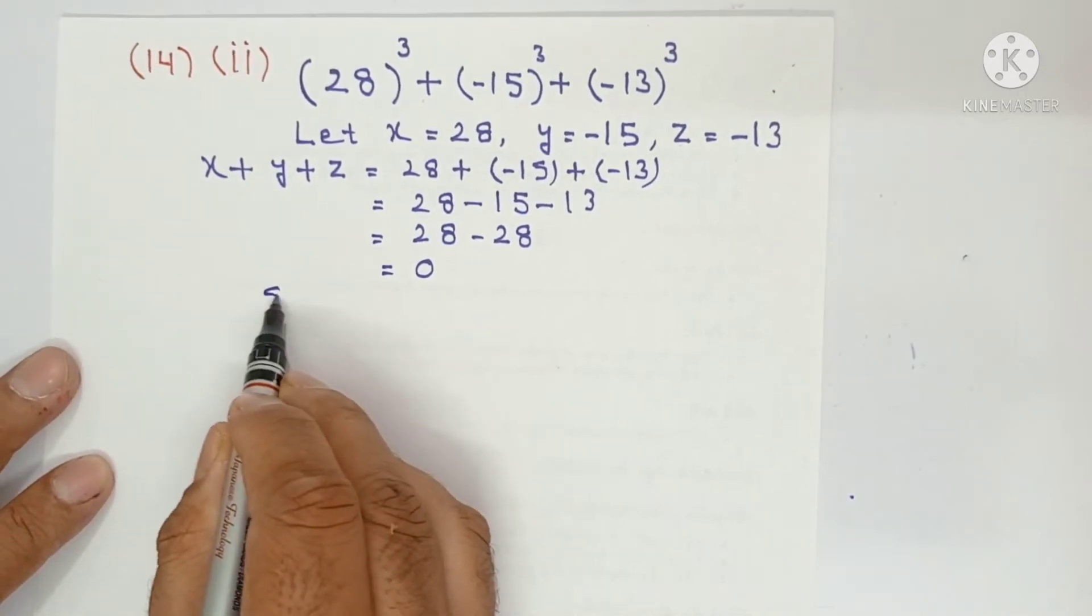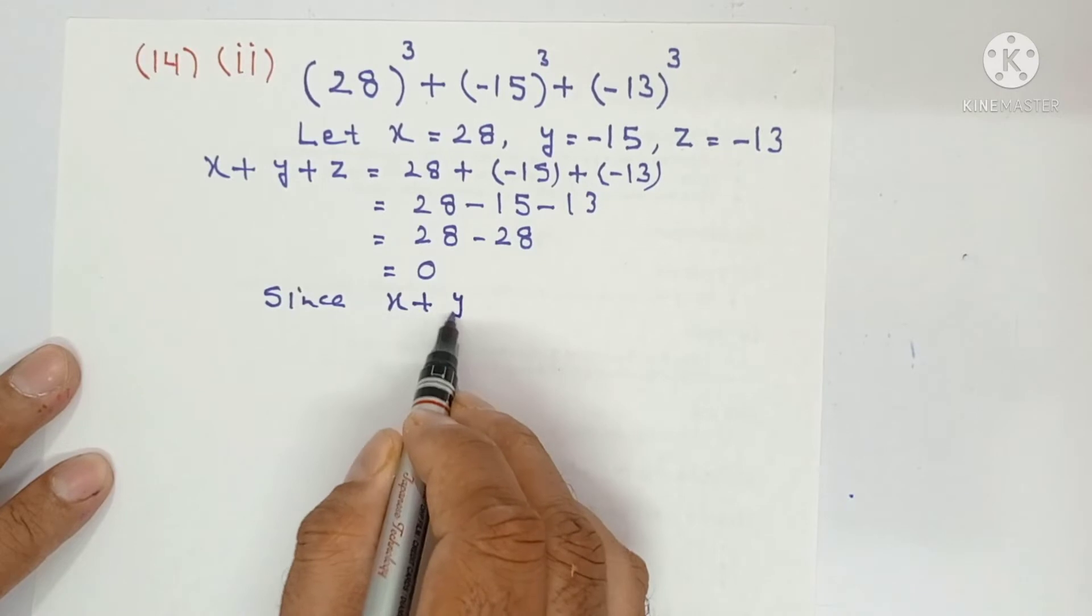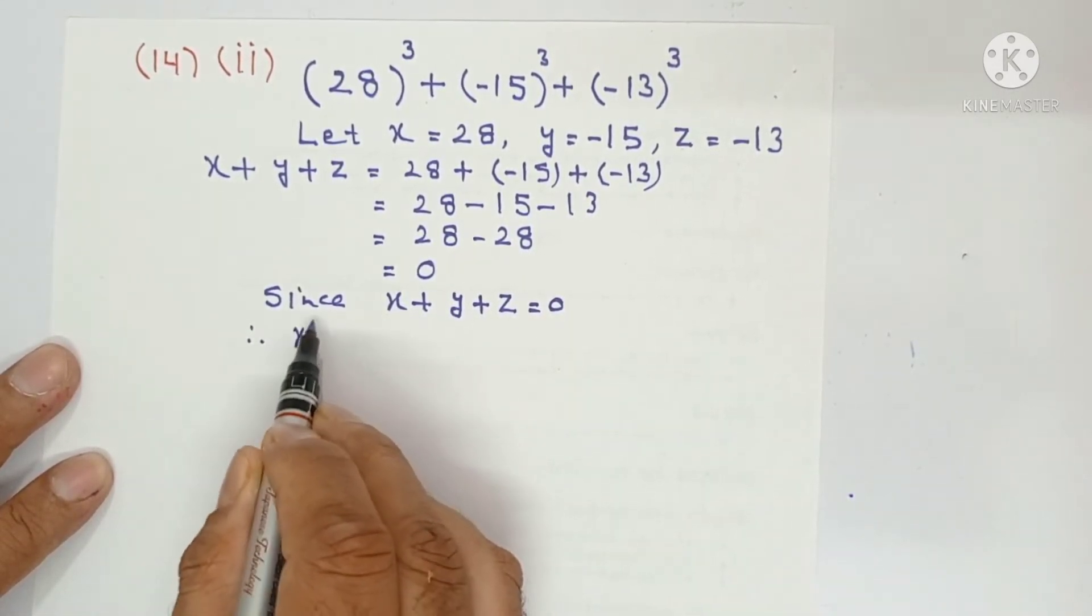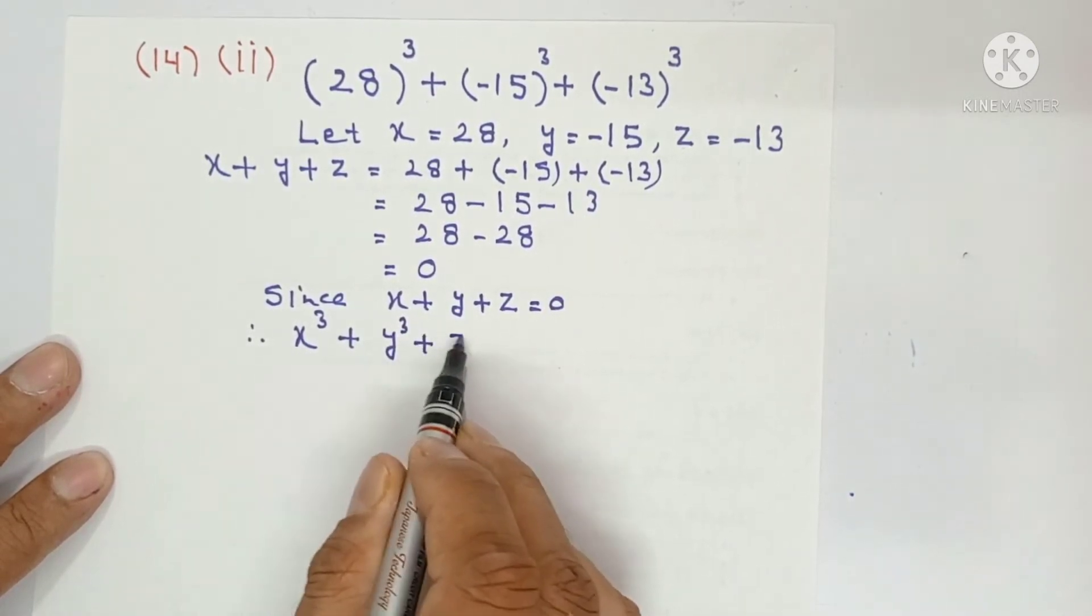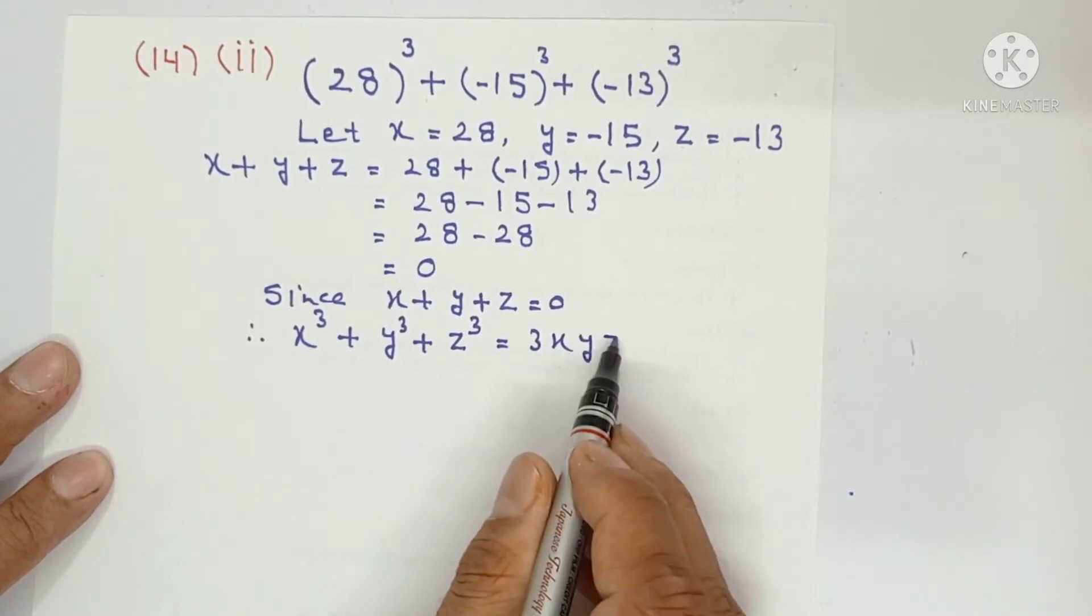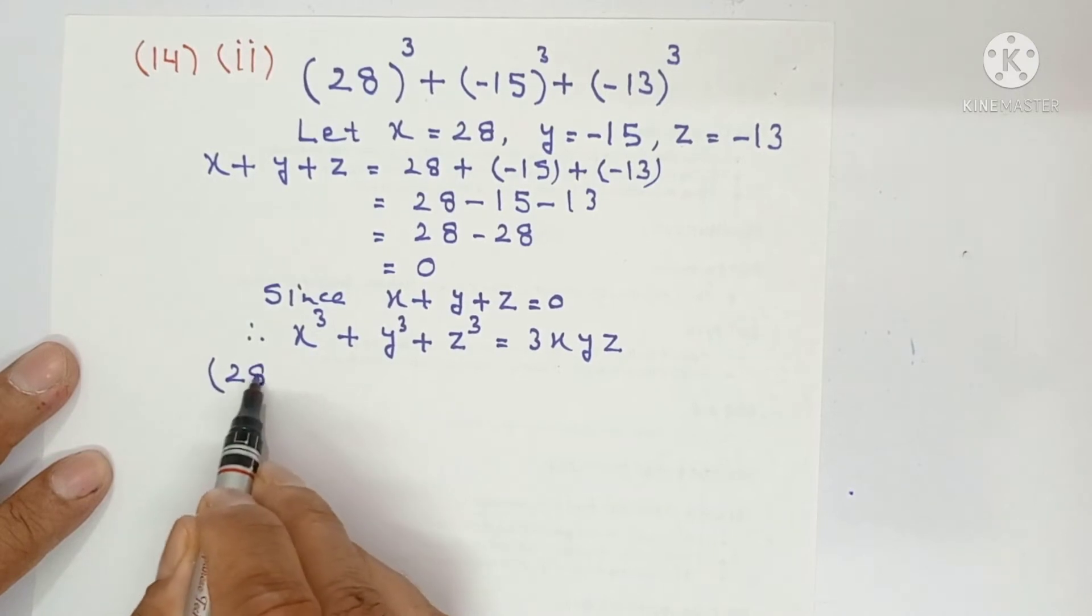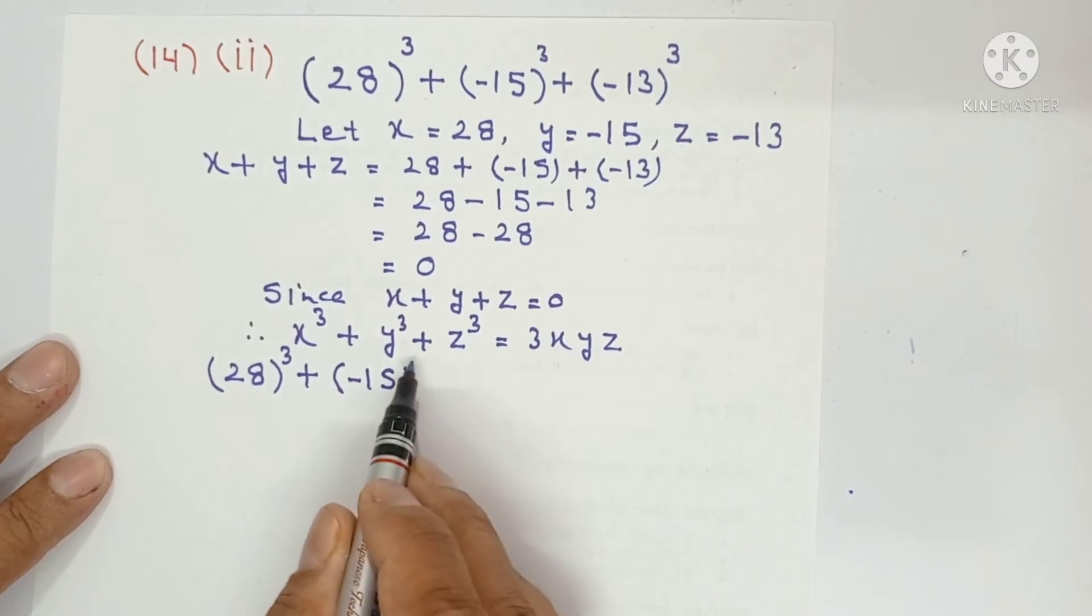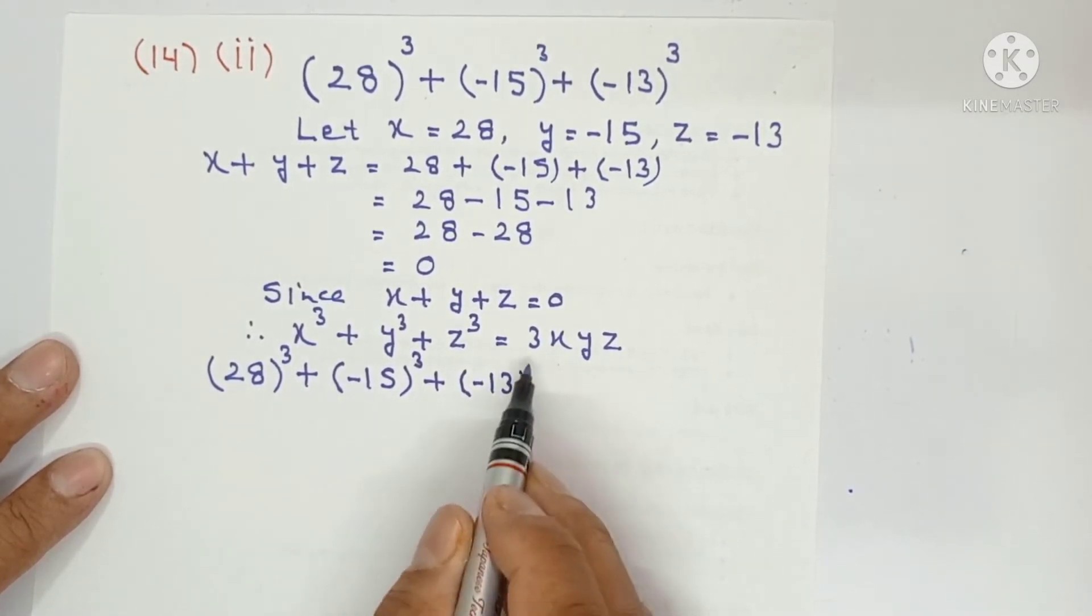Since x plus y plus z is equal to 0, therefore the identity says that x cube plus y cube plus z cube is equal to 3xyz. So 28 whole cube plus minus 15 whole cube plus minus 13 whole cube.